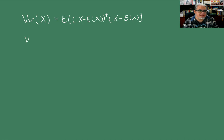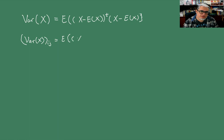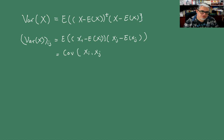El elemento ij de la matriz de varianza, pensando en esto, es la esperanza de xi menos E[xi] por xj menos E[xj], que es la covarianza de xi y xj. En el caso que tengamos los mismos índices, pues tenemos la varianza de xi. Es una matriz de varianzas y covarianzas.